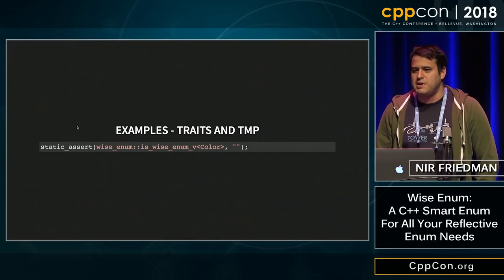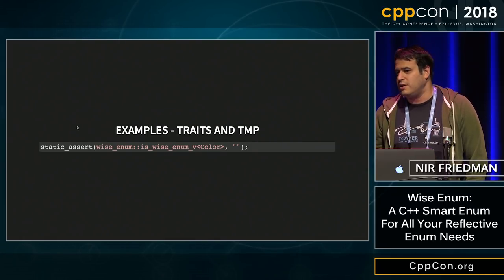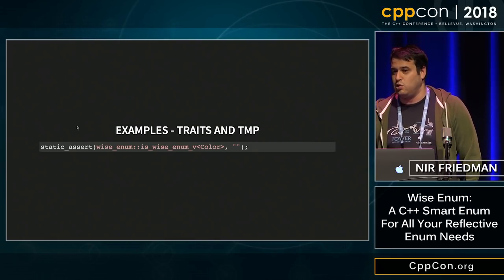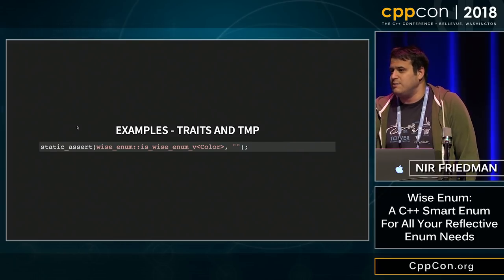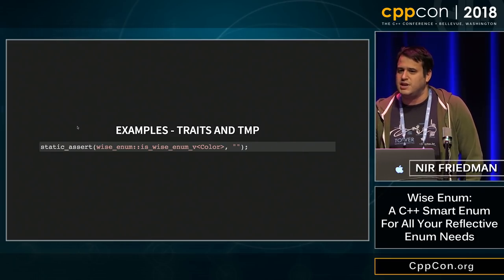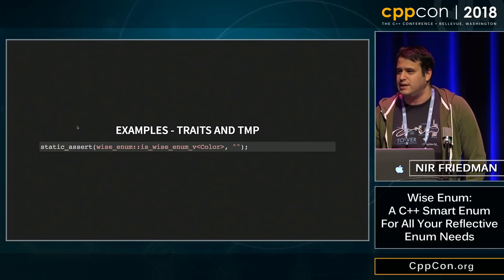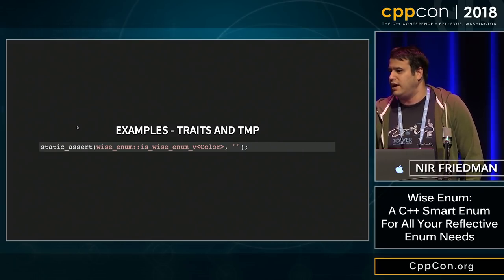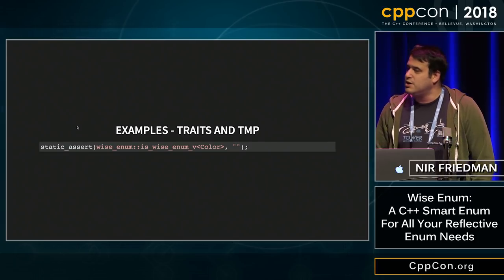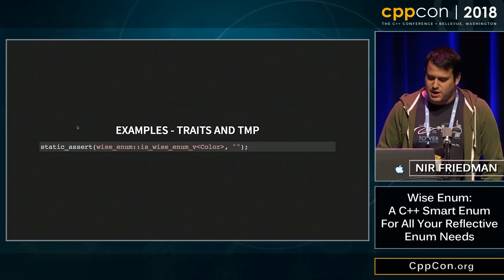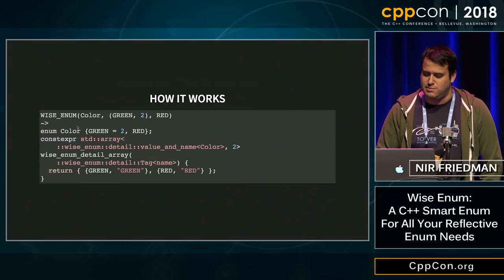If you're doing metaprogramming — like if you have a logger — you might want to have the logger log a wise enum differently, because you know exactly how to log it since you have all the strings. So there's a type trait that supports that. No problem.